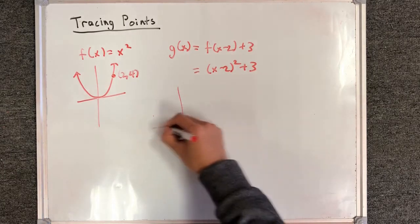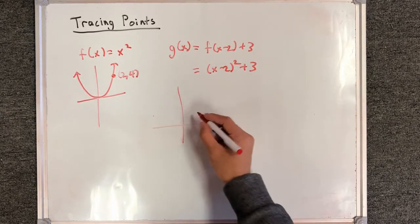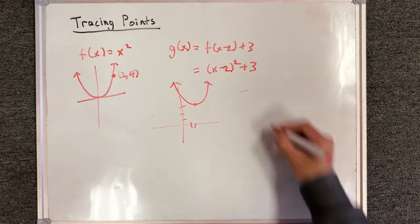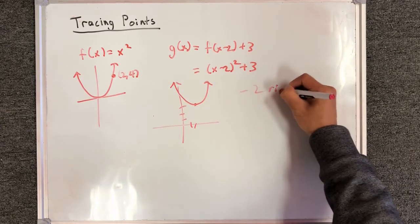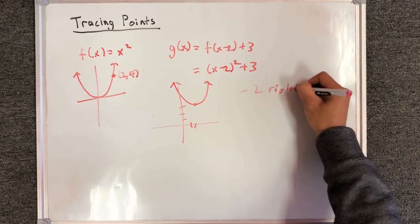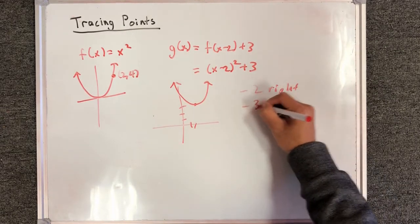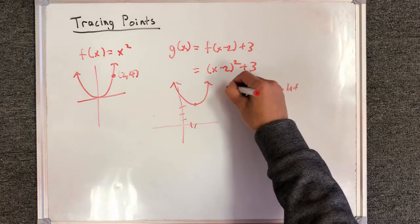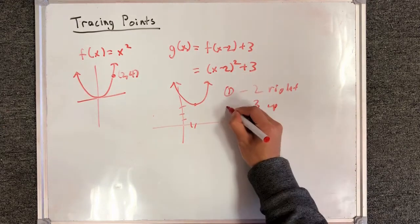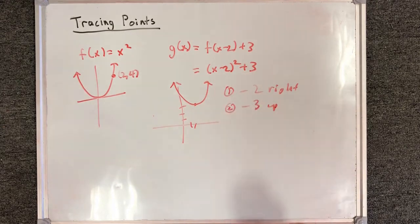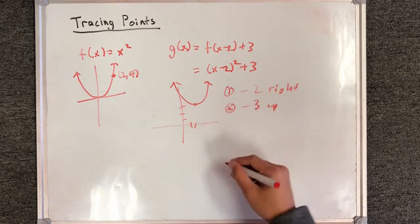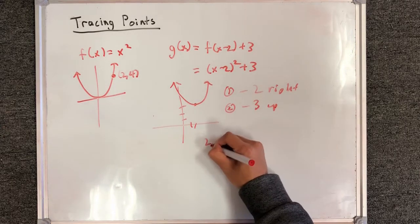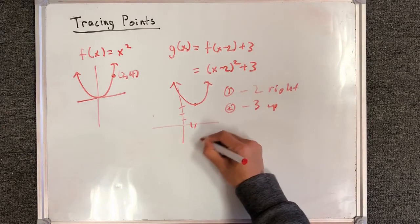So let's draw a quick sketch of what g of x might look like. Let's identify the transformations. First of all, this was 2 to the right, and then 3 units upwards. Let's label this transformation 1, transformation 2. Now I'm going to take this point and apply these transformations in this exact order. So let's say I have 2 comma 4.